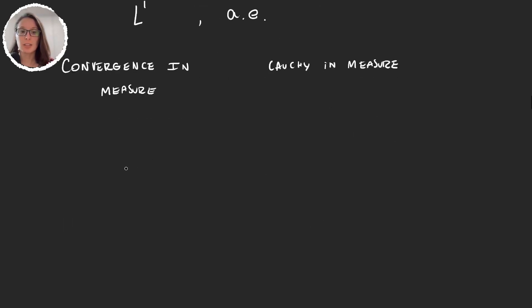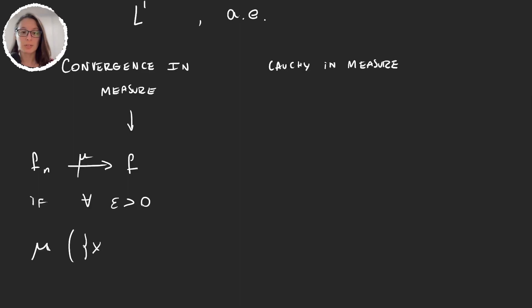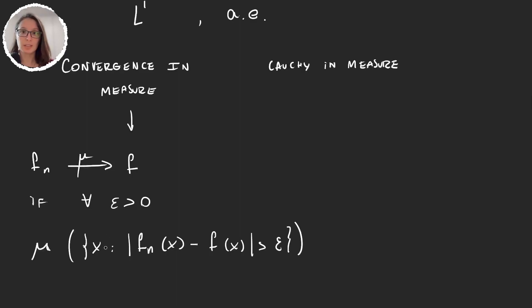Convergence in measure is when we have a sequence fn and we say that it converges in measure mu to a function f if, for every epsilon greater than zero, the measure of the set of points for which the absolute value of fn(x) minus f(x) is greater than epsilon goes to zero. Whenever this happens, we say our sequence of functions converges in measure to f.